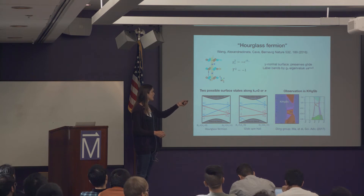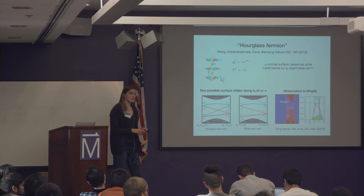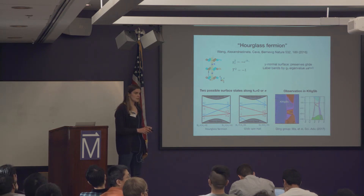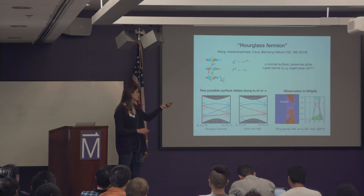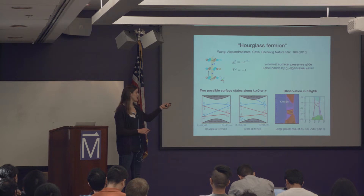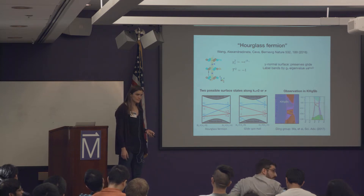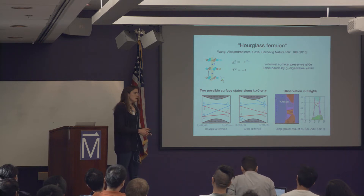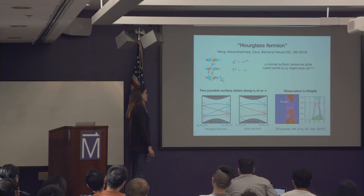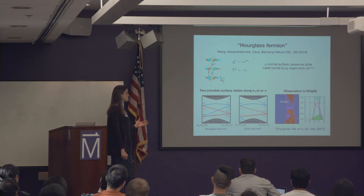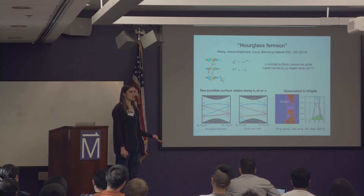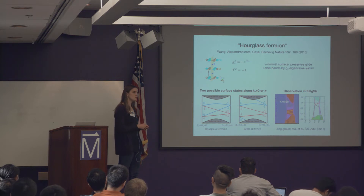On the question of complex eigenvalues: the glide symmetry squares to a translation, represented by e^{ik} in Bloch states, so the eigenvalues are plus or minus i times e^{ik/2}. As k varies, they change their eigenvalue, which drives the exchange in the band structure. Experimentally, you would most likely use ARPES to measure the presence of the states rather than directly measuring the eigenvalues, though there's no fundamental obstruction to measuring a complex eigenvalue.